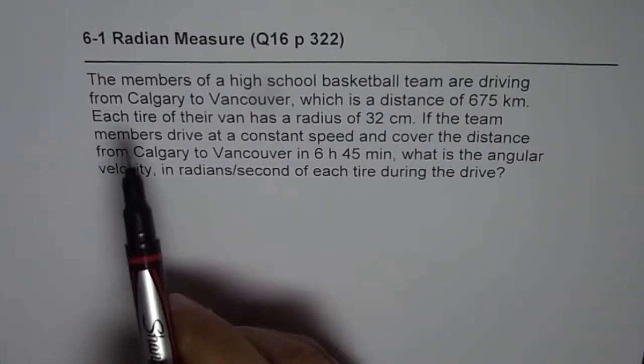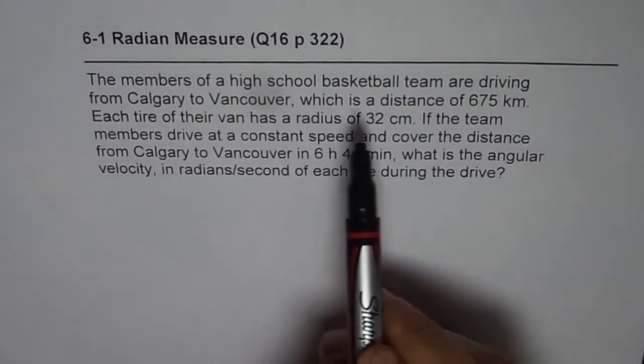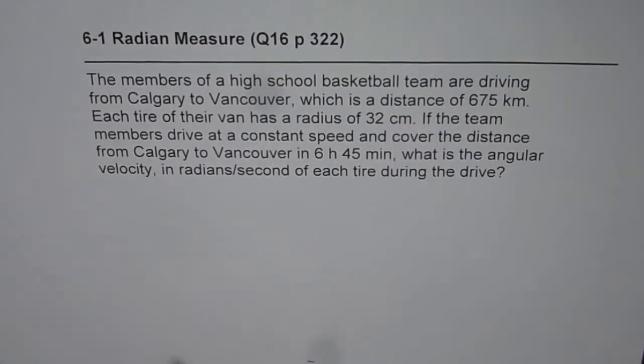The question is: The members of a high school basketball team are driving from Calgary to Vancouver which is a distance of 675 km. Each tire of their van has a radius of 32 cm. If the team members drive at a constant speed and cover the distance from Calgary to Vancouver in 6 hours 45 minutes, what is the angular velocity in radians per second of each tire during the drive?